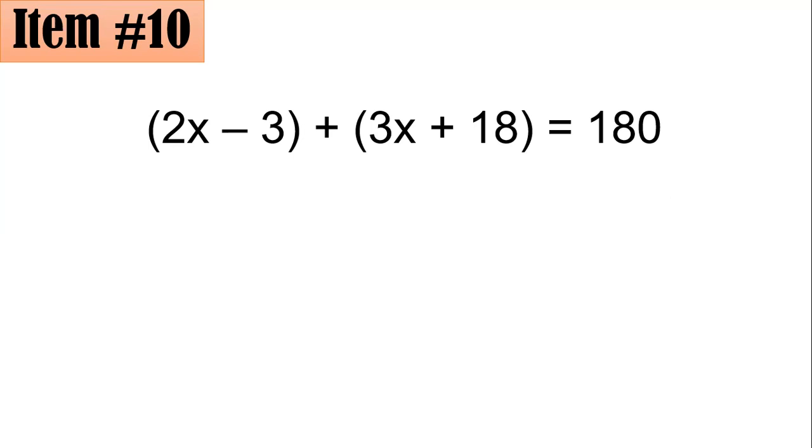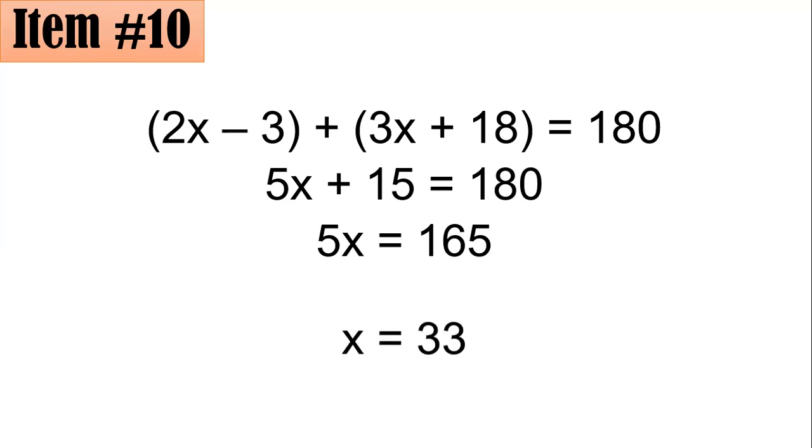Combining like terms on the left-hand side, we have 5x plus 15 equals 180. Subtracting both sides by 15, you have 5x equals 165. And dividing both sides by 5, we have x equals 33, letter A. I hope that you got 10 out of 10 so far. Thank you.